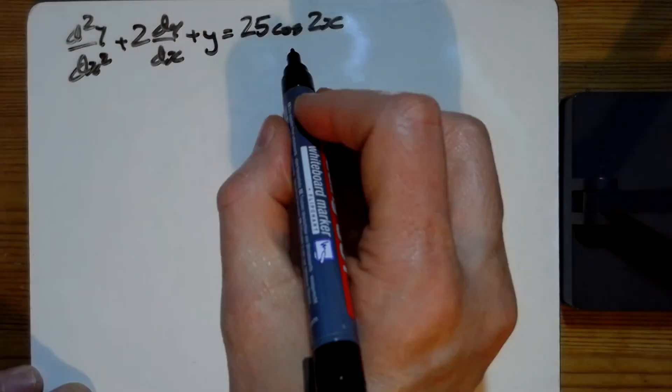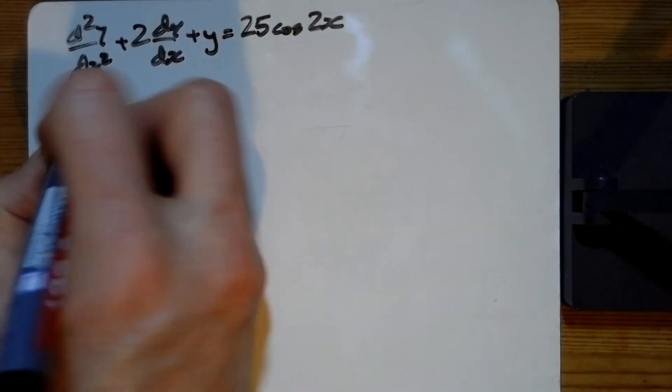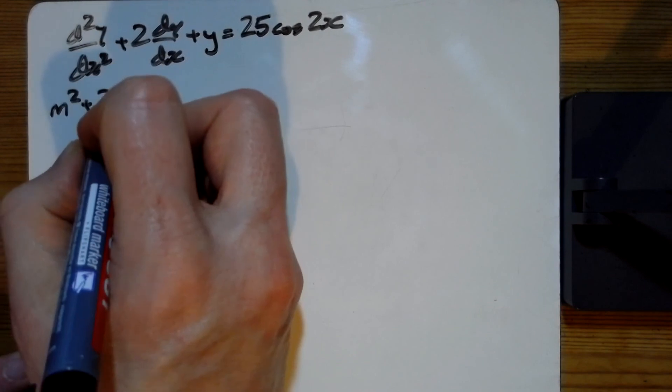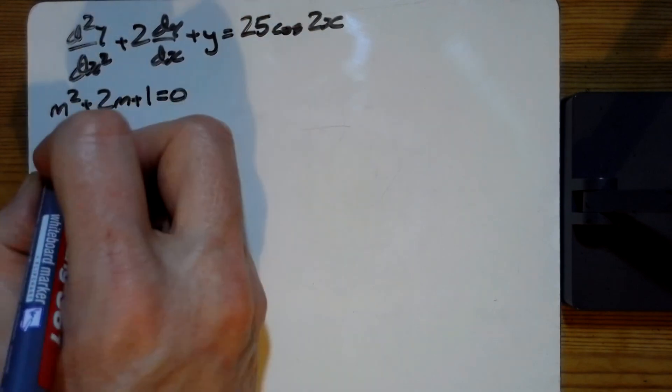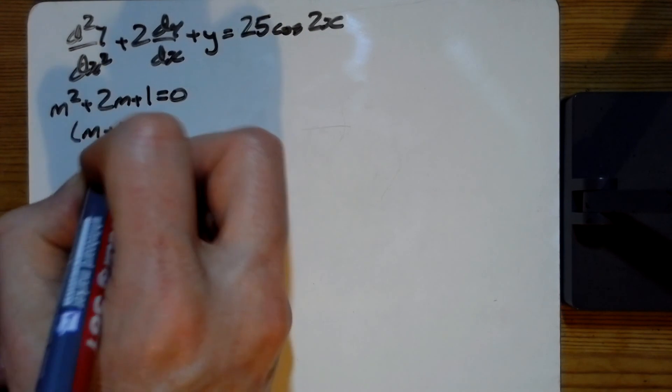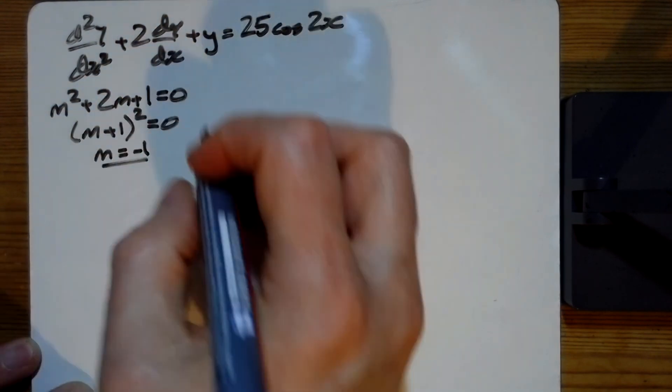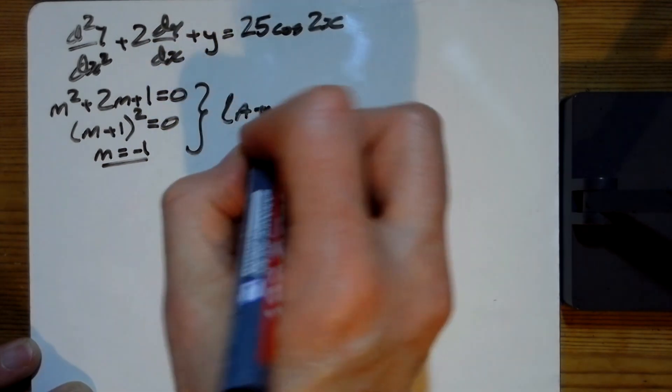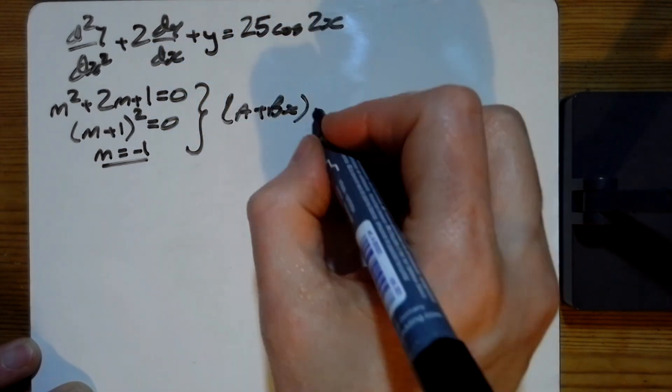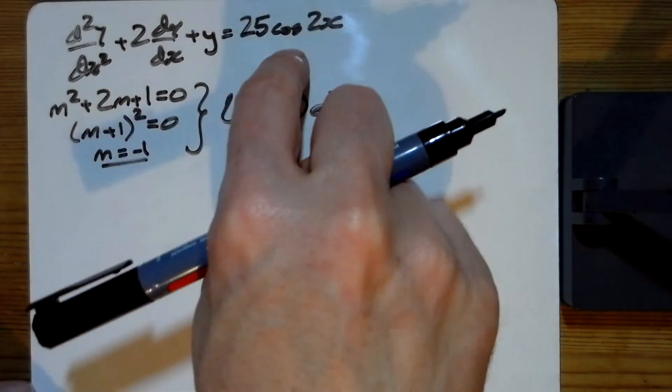For problem f, we've got our first one with a bit of trig on the right-hand side. Starting with the left as usual, we've got m² + 2m + 1 = 0, and so that is a repeated root with m = -1. That's going to give me (a + bx)e^(-x). That's part of our answer, but now the right-hand side.